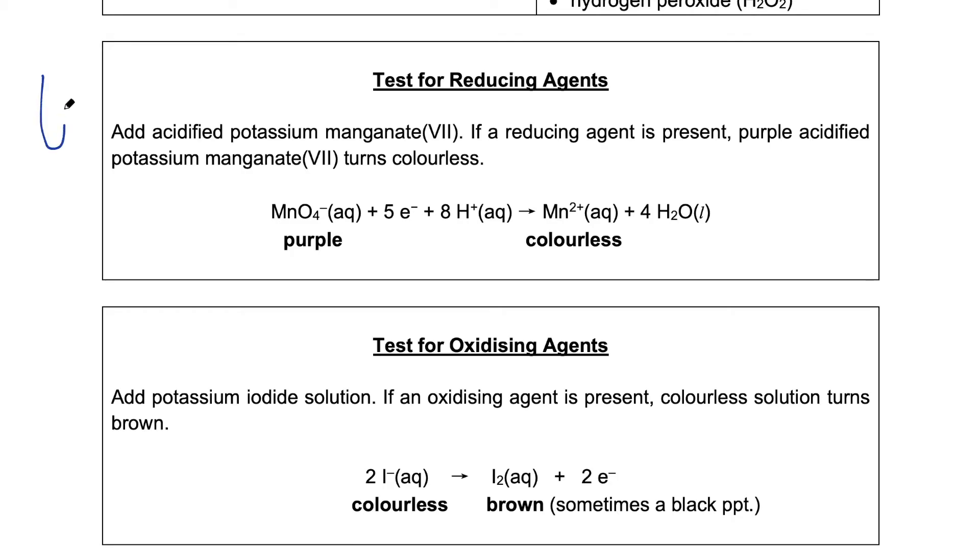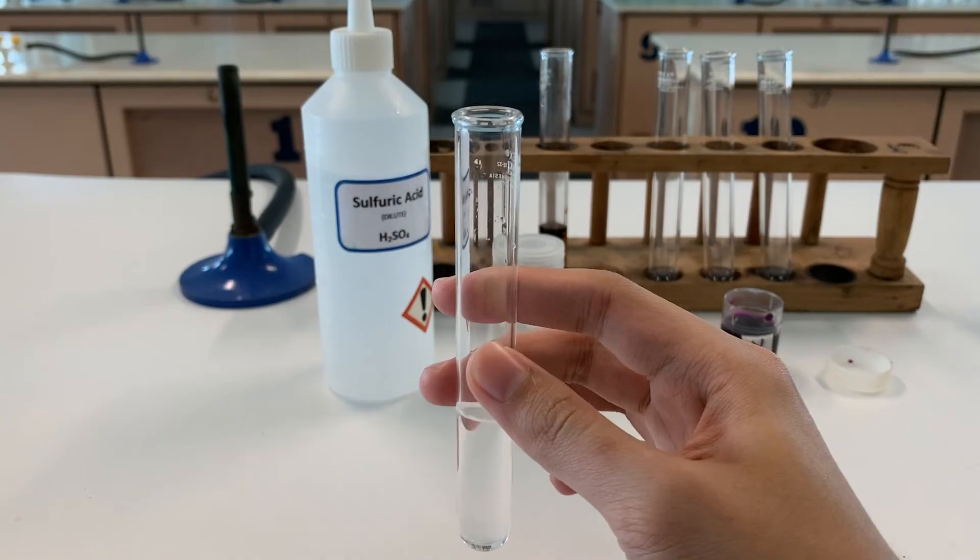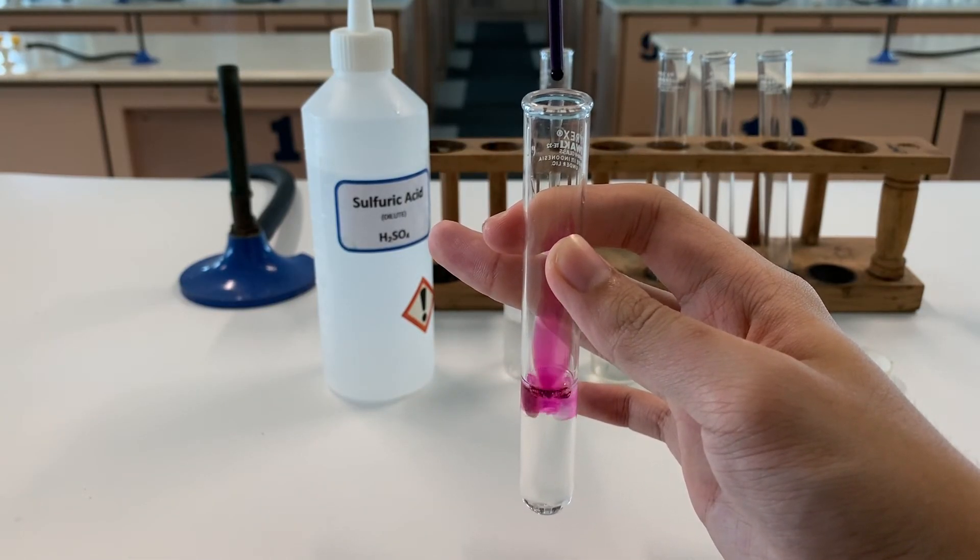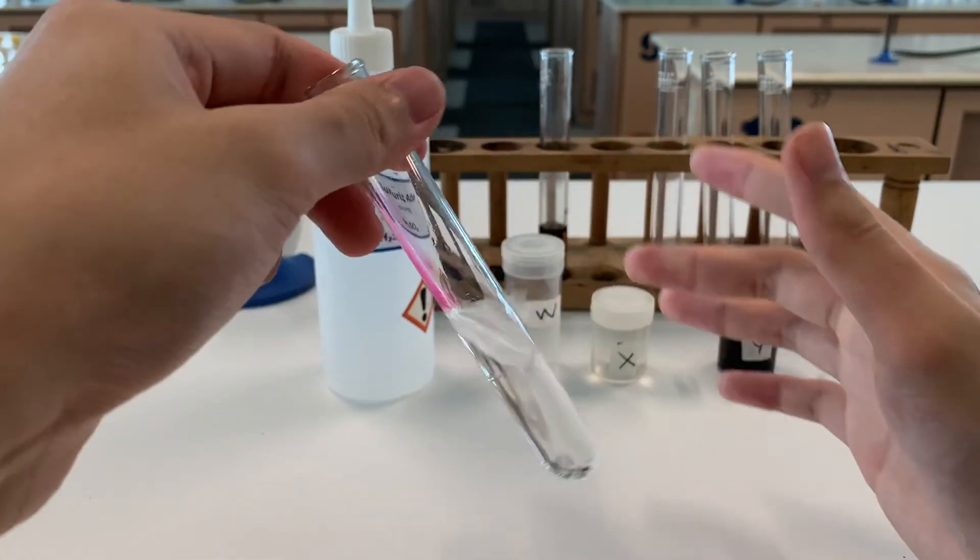If I have an unknown solution, how do I know whether it contains a reducing agent? Remember that a reducing agent causes something to be reduced. When potassium manganate(VII) is reduced, there is a color change that can be easily observed. And this color change would tell us that a reducing agent was present. So the test is to add acidified potassium manganate(VII). If a reducing agent is present, the purple solution turns colorless.